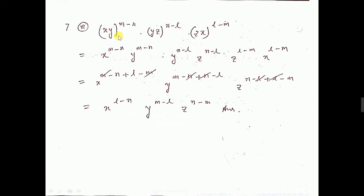See: x to the power m minus n, into y to the power m minus n — you have to give this power to everyone. Y to the power n minus l, z to the power n minus l, z to the power l minus m, x to the power l minus m. Now x to the power m minus n plus n minus l — the n's cancel. Y to the power m minus n plus n minus l — the n's cancel. Z to the power n minus l plus l minus m — the l's cancel. What is left: l minus m, m minus l, n minus m, so that is the answer.